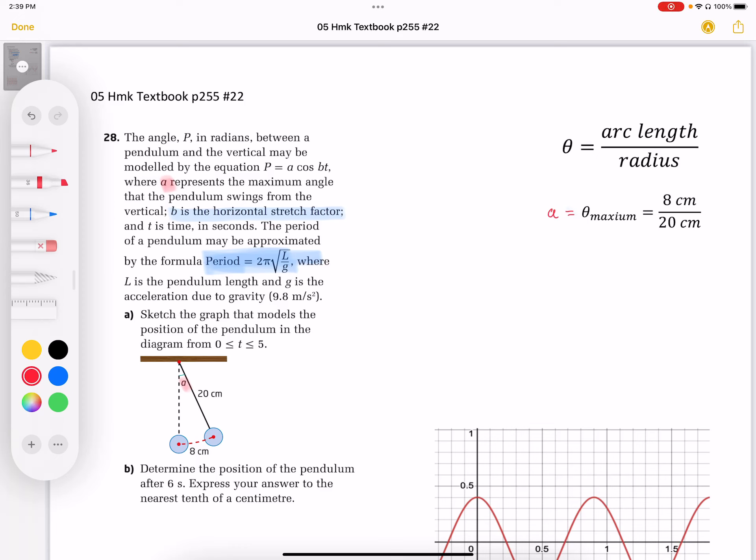Number 28. The angle P in radians between the pendulum and the vertical may be modeled by the equation P equals A cosine Bt.